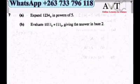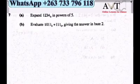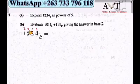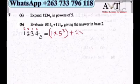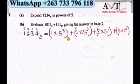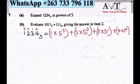Question 7a: Expand 1234 base 5 in powers of 5. Considering place values from right (positions 0 to 3): 1×5³ + 2×5² + 3×5¹ + 4×5⁰. This is the expression in powers of 5, and that is our final answer.